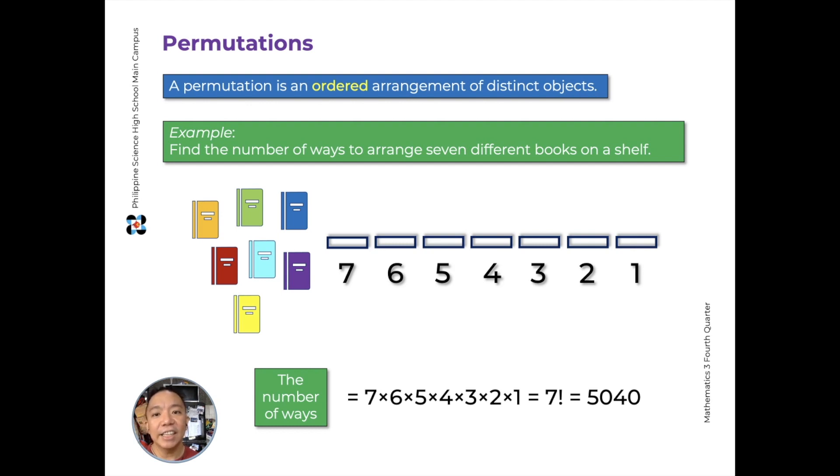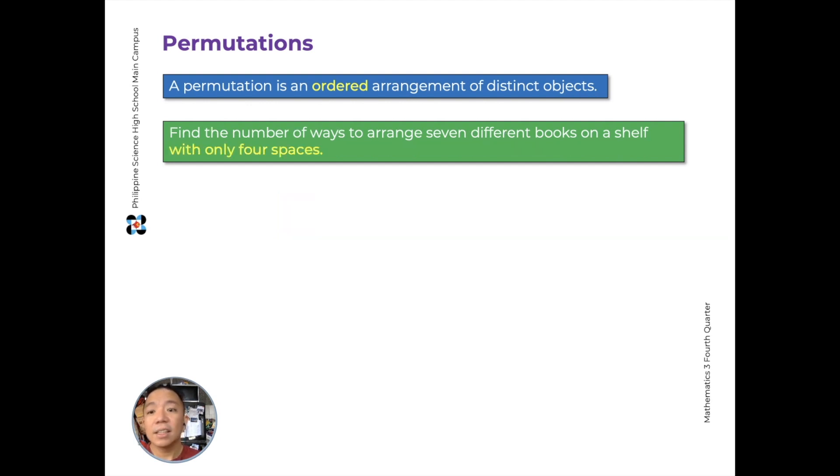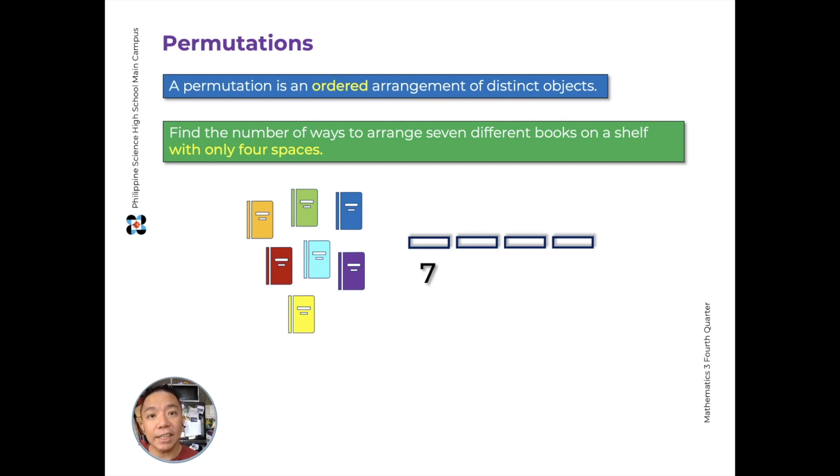Now let's say that instead of having 7 spaces, we only have 4 spaces on our shelf. So I have 7 books, I have 4 spaces. We approach this like before. For the first position, we have 7 books that can be placed. For the second position, we'll have 6. For the third position, we'll have 5. And for the fourth, we'll have 4. Then we don't care about the last remaining three books and where they go. So the number of ways to arrange 7 books in 4 spaces will just be the product of 7 times 6 times 5 times 4, which is 840.